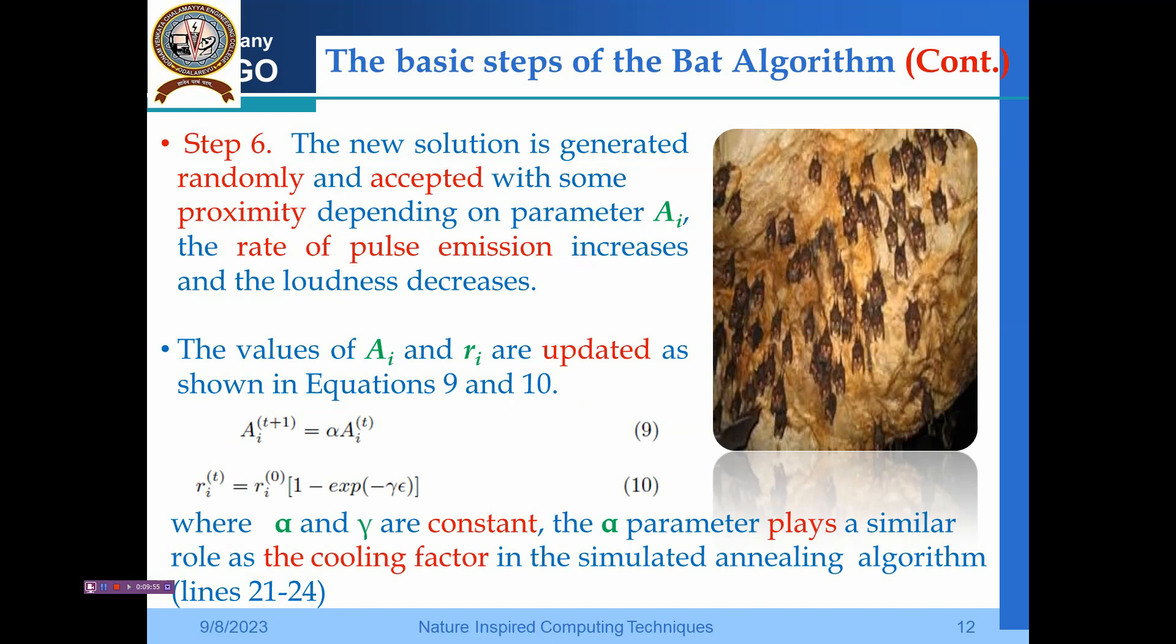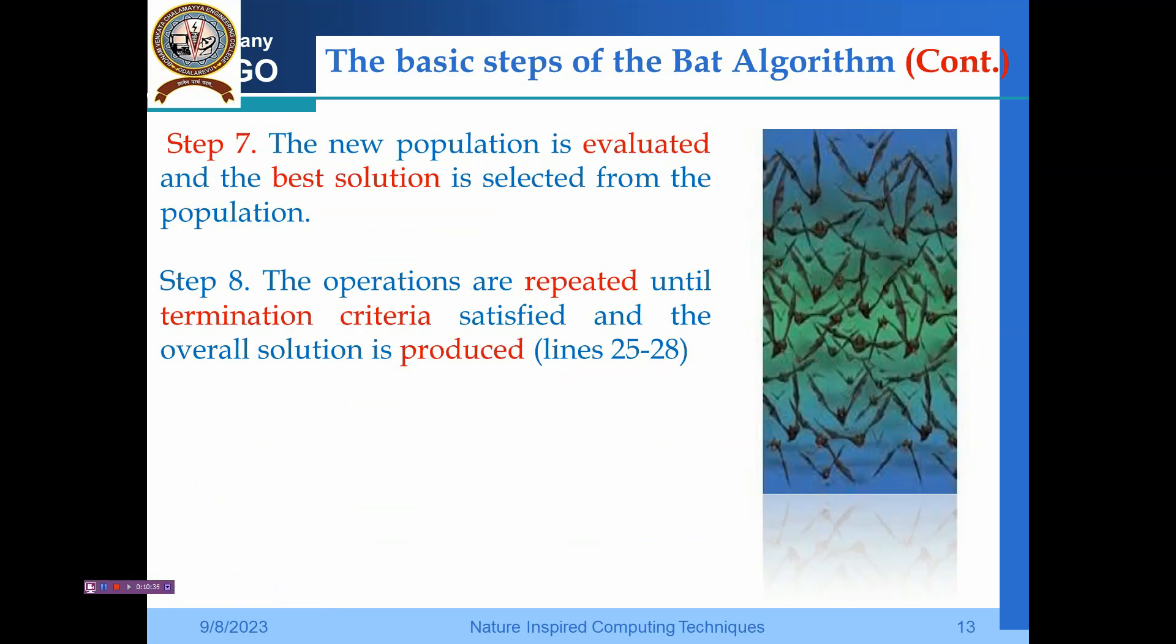In step 6, the new solution is generated randomly and accepted with some proximity depending on parameter A_i. The rate of pulse emission increases and loudness decreases. The values of A_i and r_i are updated using equations: A_i(t+1) = alpha * A_i(t), and r_i(t) = r_i(0) * [1 - e^(-gamma*t)]. Alpha and gamma are constants. Alpha plays a similar role to the cooling factor in simulated annealing. The new population is evaluated, the best solution is selected, and operations are repeated until the termination criteria is satisfied and the overall solution is produced. This can be implemented using Python or Java.